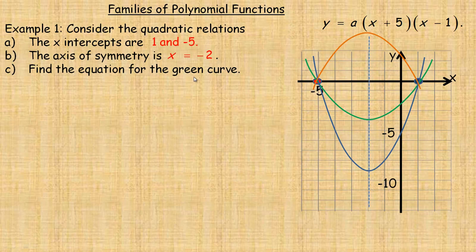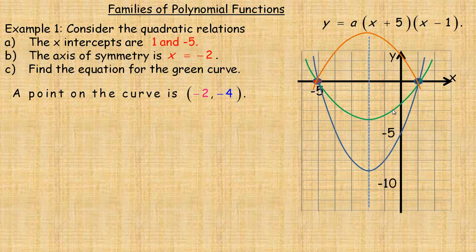In part c, we're asked to find the equation of the green curve. To find the equation, we need to identify a point that we know is on the curve, and we can't use one of the intercepts — they don't allow us to solve for the value of a. Once you know a, you know the entire equation. A point on the green curve is, for example, negative 2 comma negative 4: start at the origin, go left 2 and down 4.